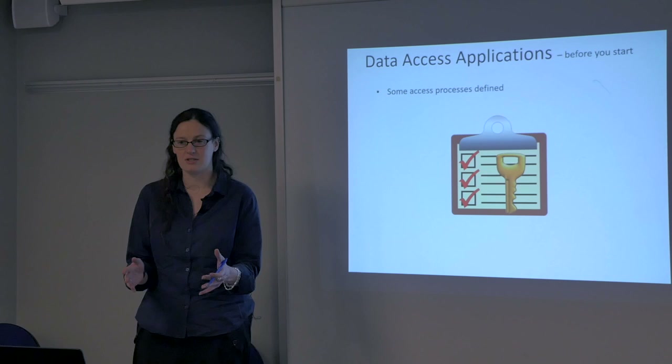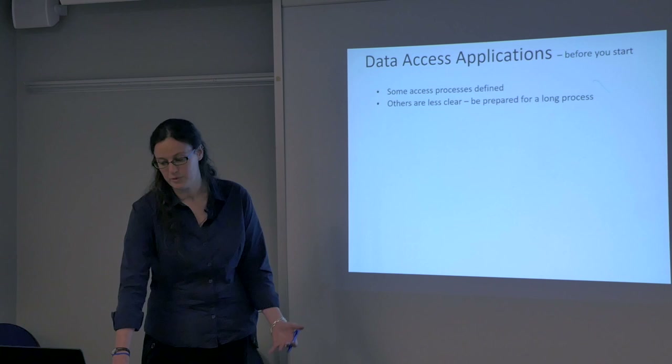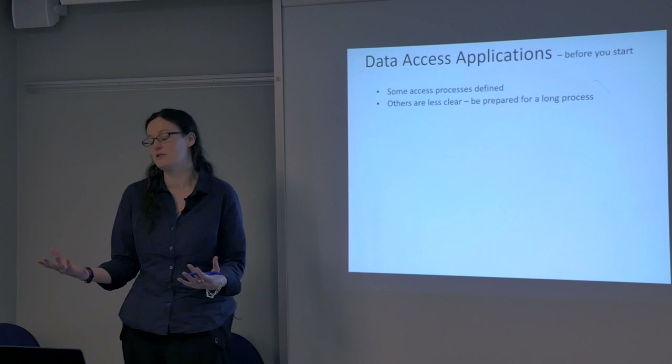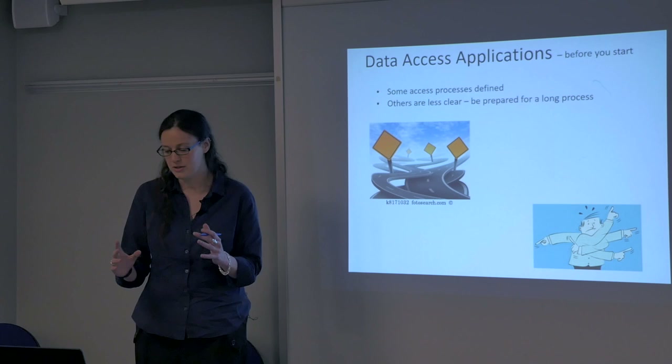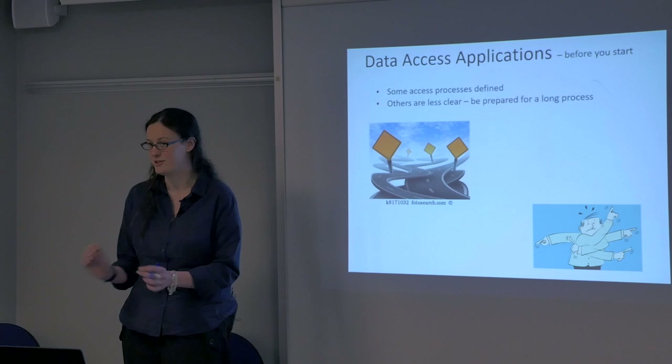A lot of places have a specific access process — do these three things, show these three things, and we will give you access to your data. Other places are a little bit less clear, maybe they've never been asked for data for research purposes before, which can lead you down some strange roads. Just be prepared for it, don't be too daunted. There are lots of forms and you can copy and paste between them.